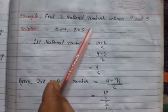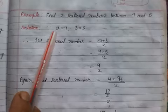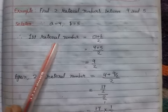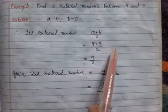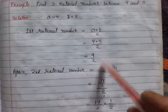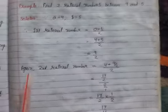Now we'll give some examples. Find two rational numbers between 4 and 5. Solution: We take a equals 4 and b equals 5. The first rational number equals a plus b by 2, which means 4 plus 5 by 2. That is 9 by 2. This is the first rational number.